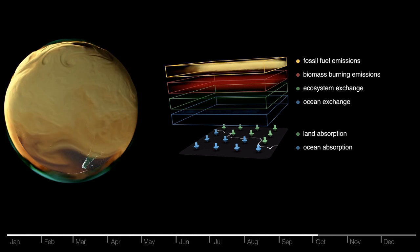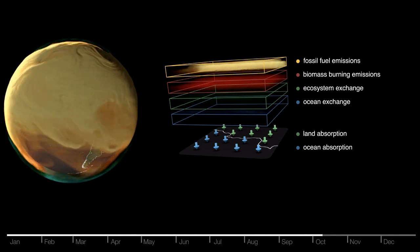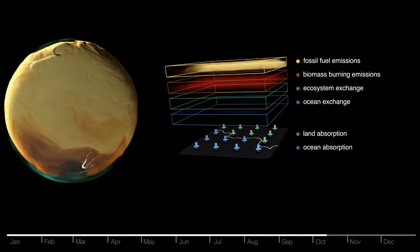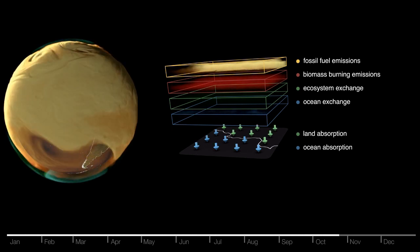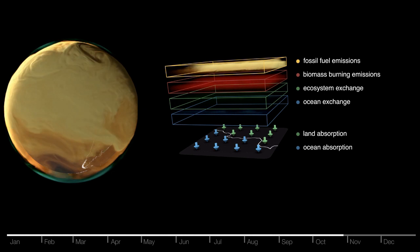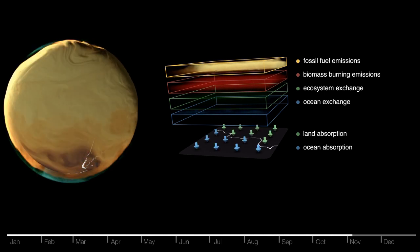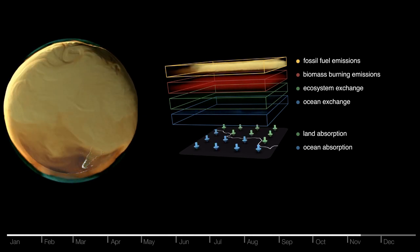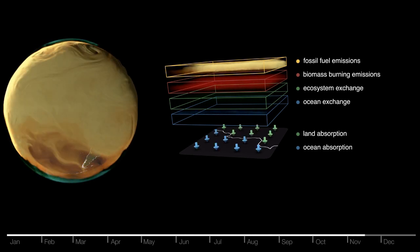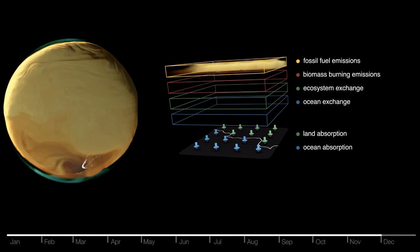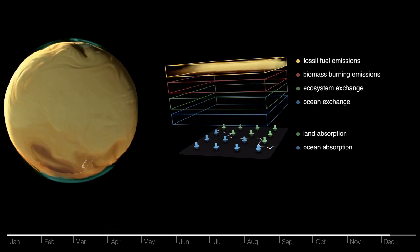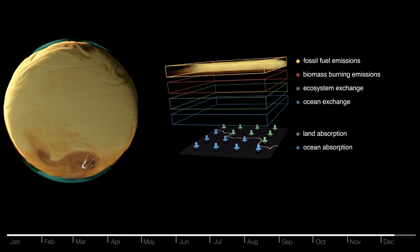There are other factors contributing to the overall increase in carbon dioxide levels. For instance, we see that biomass burning happens at some points, contributing significantly. Nevertheless, the atmospheric carbon dioxide continues to accumulate and gets distributed throughout the globe.